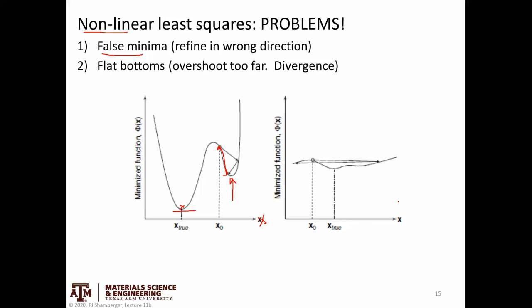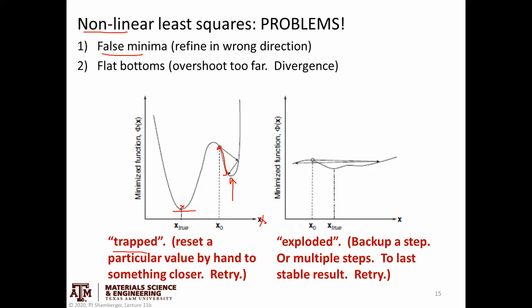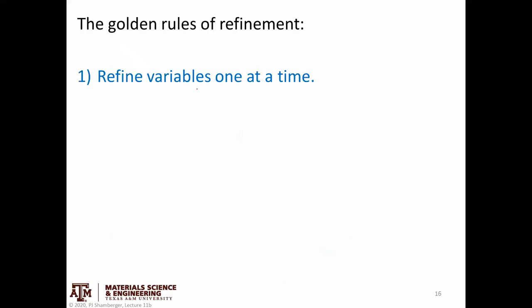Refinement software typically asks you after each refinement if you'd like to proceed. This is because if you do something wrong and your values go haywire, you can immediately tell from the figures of merit, which usually blow up on you. So this is a case of being trapped versus exploding — going out of bounds.